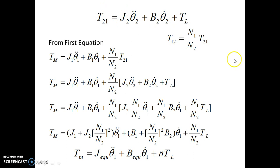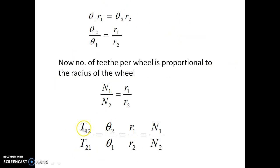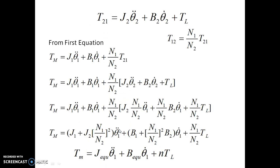From the relational operator, we know that the relation between T12 and T21 can be governed by the proportional value of number of teeth N1 and N2, so we can write T12 equals N1/N2 times T21. From the first equation, if we substitute T12, we can get this value here. Theta1 and theta2 are there; if we substitute this, we can get this value.